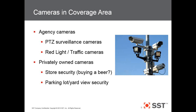Red light and traffic cameras — these people are commonly in a hurry to leave the scene, so check any red light or speed cameras in the coverage area. And then privately owned cameras: check local stores and know where parking lot security cameras are for businesses or yard-view security cameras for residents. We've had cases where a resident's security camera caught a shooting — suspects walked up to a vehicle parked at the curb and shot into the car, all caught on a residential security camera.